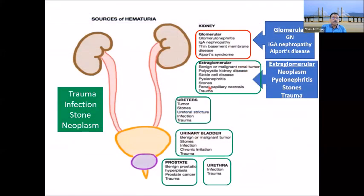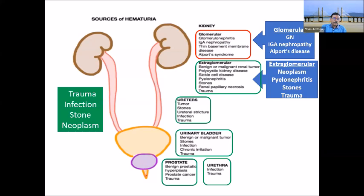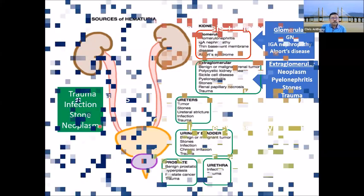Glomerular causes are usually medical — glomerulonephritis, nephropathy, Alport's disease, and various kidney diseases. Extra-glomerular causes are usually surgical — the four groups being neoplasm, pyelonephritis, stones, and trauma. The sources of bleeding span the entire urinary system: the kidneys, ureters, bladder, prostate in males, and the urethra, also mainly in males.